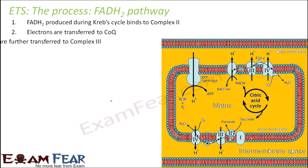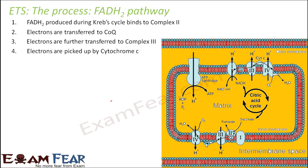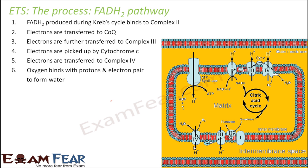From Coenzyme Q, electrons move on to Complex 3, then are carried to cytochrome C, and from cytochrome C they move on to Complex 4. The entire process remains the same — the only difference is that for the NADH pathway, Complex 1 is involved, while for the FADH2 pathway, Complex 2 is involved. Once electrons reach Complex 4, oxygen combines with the electron pair to form water, and hydrogen ions accumulate in the intermembrane space, developing a proton gradient.